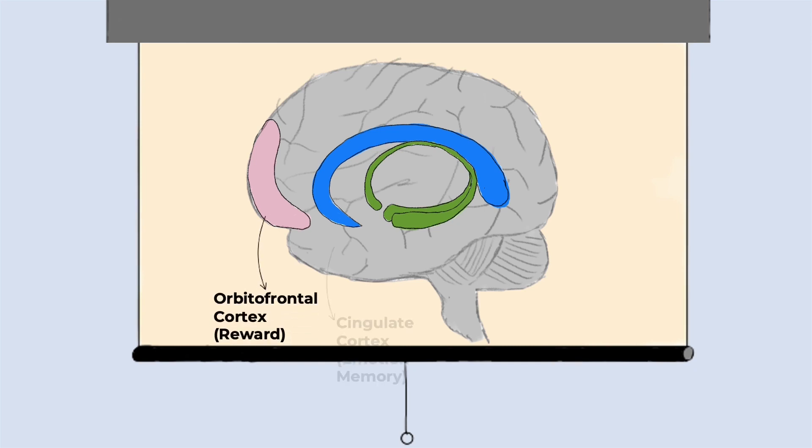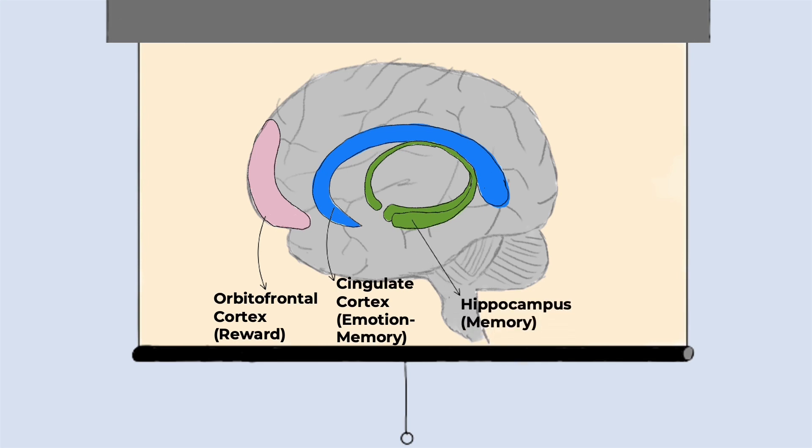One of the main reward areas is the orbital frontal cortex, which is directly connected to the cingulate cortex. The cingulate cortex is often thought of as the bridge between the emotion centers and memory areas of the brain. So the signal is passed along this structure to the memory area of the hippocampus.